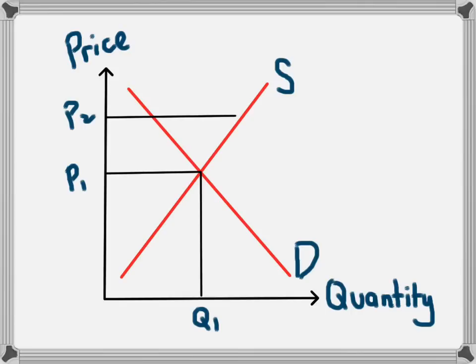Because the price is so high, businesses would want to supply more of this product. In this case, they would be willing to supply Q2. Because the price is this high, consumers won't want to buy that many. They would only want to demand Q3.